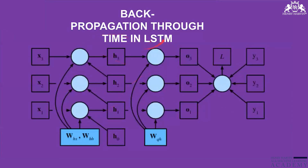Back propagation through time in LSTM. These are inputs, these are weights, multiplication here, processing some activation function in the hidden layer. Then these three parts are called short term, and they connect with each other to create long short-term memory. Either in the final different output layer.